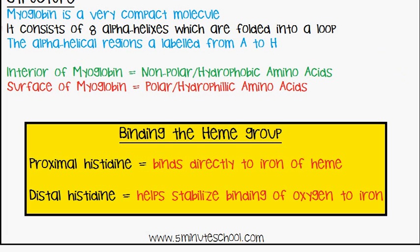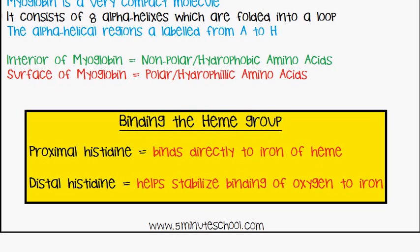Finally, to finish off the video, we're going to talk about the binding of the heme group — specifically how the heme part is stabilized within the myoglobin structure. There are two residues which help to bind the heme group: the proximal histidine residue, which binds directly to the iron of heme, and the distal histidine, which helps to stabilize the binding of oxygen to the iron itself.